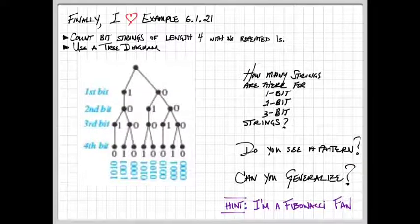And finally, I just want to draw your attention to example 6.1.21 in the book. In this example, it counts bit strings of length 4 with no repeated 1s by using a tree diagram. And I've included that tree diagram for you here. Notice if you add a 0, you can then add a 1 or a 0 after it. But if you have a 1, it must be followed by a 0 because we're not allowed to repeat 1s. I ask you just to look at this and count how many 1-bit strings are there, 2-bit strings, 3-bit strings, and so forth. Look for the pattern. Can you generalize it? And you should know, I am a fan of Fibonacci. Now you're ready to go on to Part 3, which will start Section 6.2 on the Pigeonhole Principle.